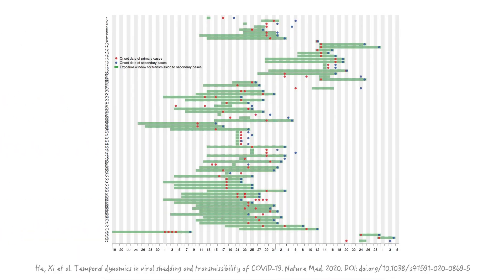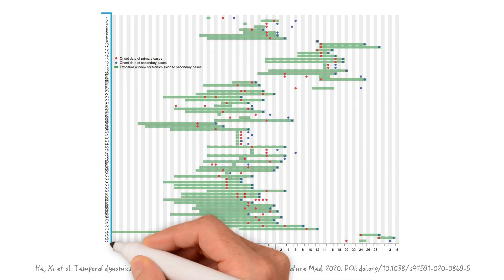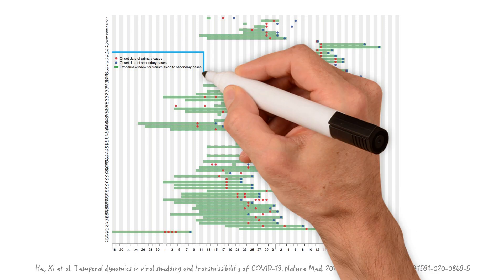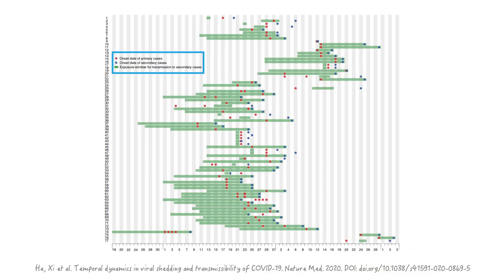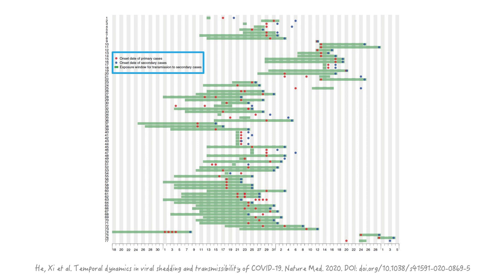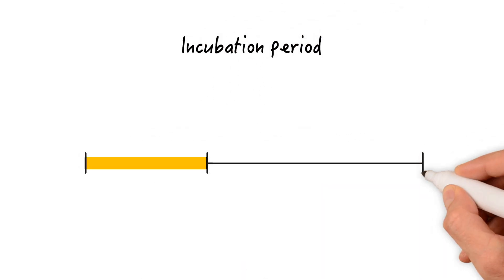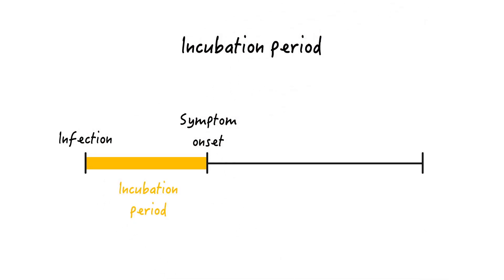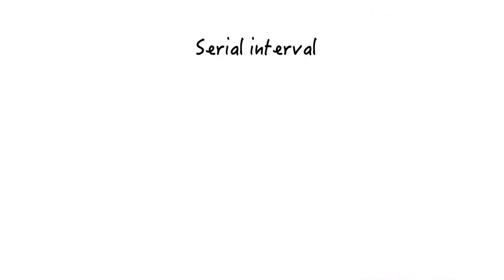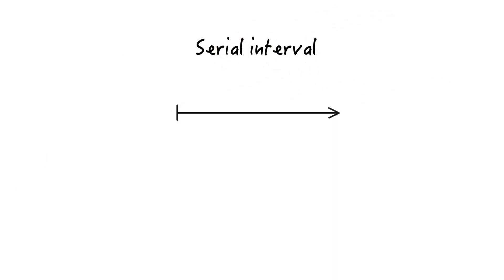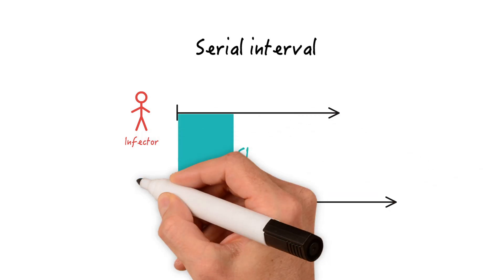So that's what the authors looked at. They had a group of 77 transmission pairs. Red dots indicate the onset of symptoms in the infector or primary case. Blue dots indicate onset of symptoms in the infectee or secondary case, and green bars indicate the exposure window of transmission during which infection must have occurred. The authors used two key concepts in epidemiology: the incubation period, which is the time from infection to symptom onset, and the serial interval, which is the time from symptom onset in the infector to symptom onset in the infectee.